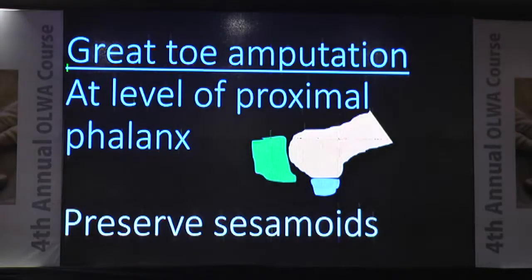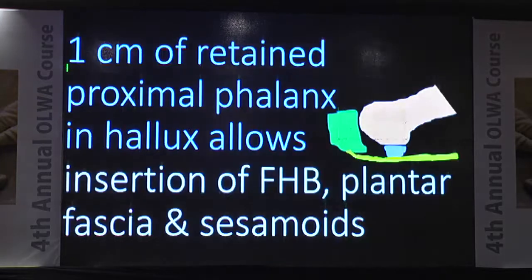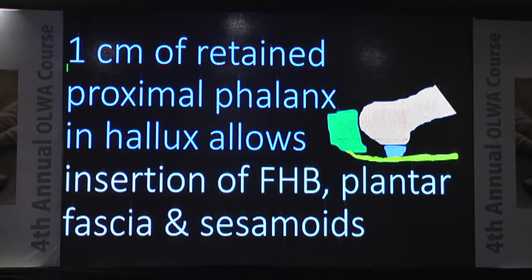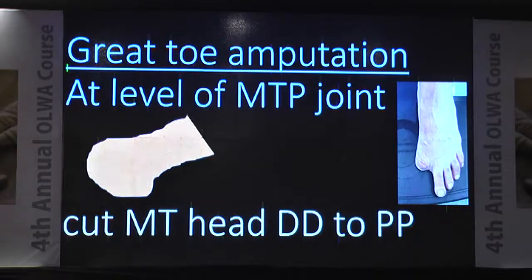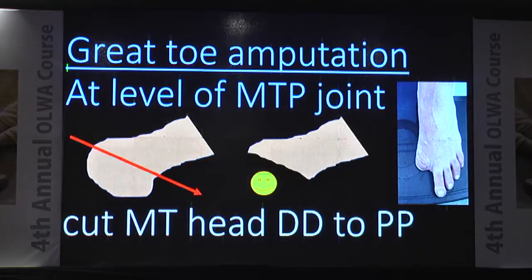For great toe amputation at the level of the proximal phalanx — the most preferred level — preserve the sesamoids. One centimeter of retained proximal phalanx allows for insertion of flexor hallucis brevis, plantar fascia, and sesamoids. If you are doing great toe amputation at the MTP joint level, sacrifice the sesamoids; otherwise they will give rise to pressure, corns, and callosity. Whenever doing amputation at the MTP joint level, cut the metatarsal head dorsal-distal to plantar-proximal.